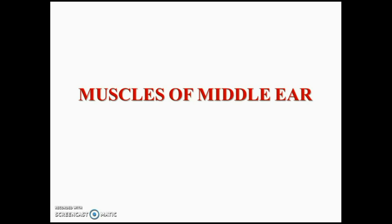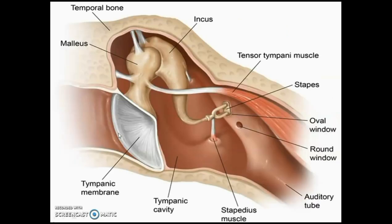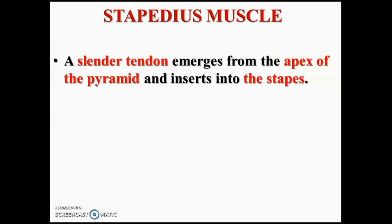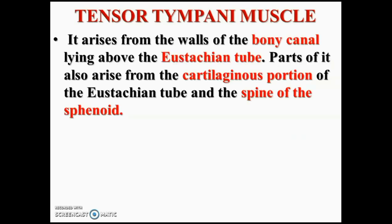Coming to the muscles of the middle ear: the stapedius arises from the posterior wall of the tympanic cavity from the pyramidal eminence and also from the bony canal of the facial nerve. It inserts into the posterior part of the neck of the stapes and also the upper part of the posterior crus. It withdraws the stapes laterally in the stapedial reflex and prevents damage to the internal ear. It is supplied by a small branch of the facial nerve coming from the posterior bony canal.